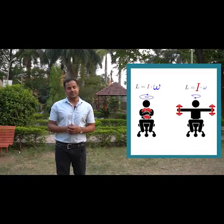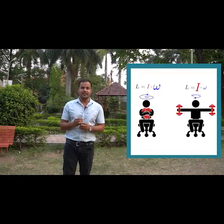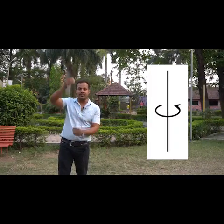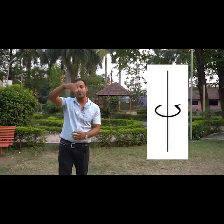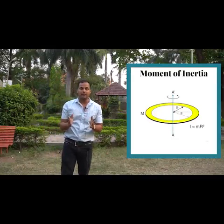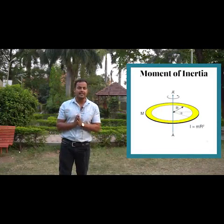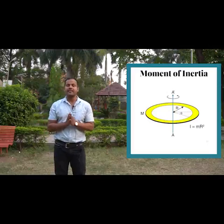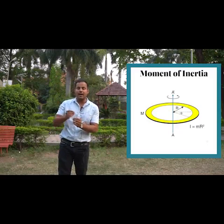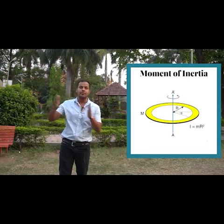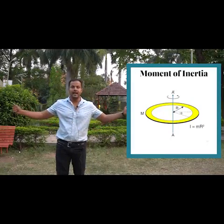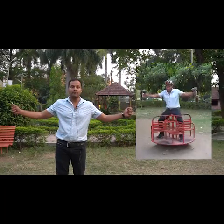Let's see some basic terms. The axis is an imaginary line about which circular motion occurs. The moment of inertia is I, which is equal to mr squared, where m is mass and r is the distance from the axis. If the mass is at a greater distance from the axis, the moment of inertia increases.